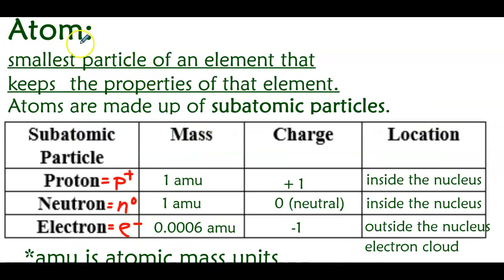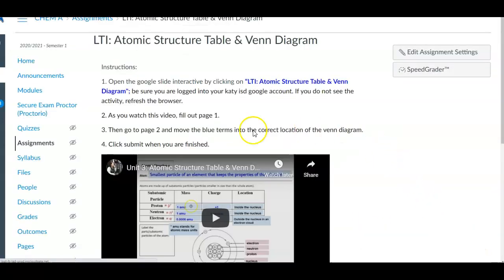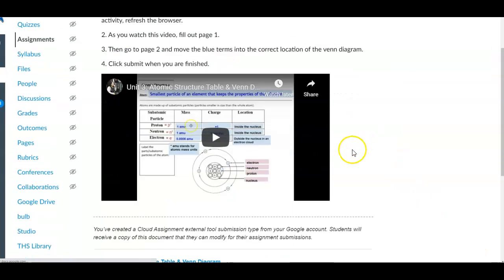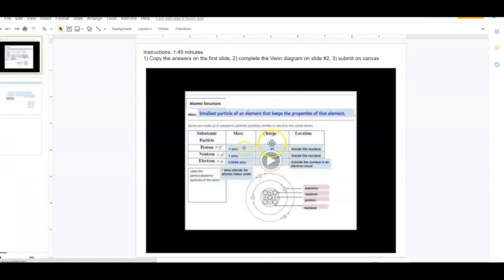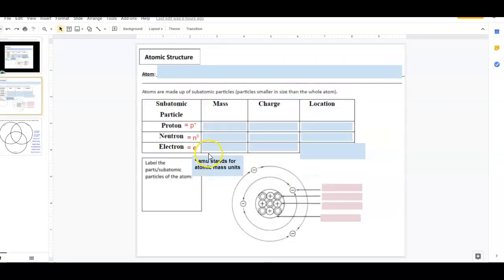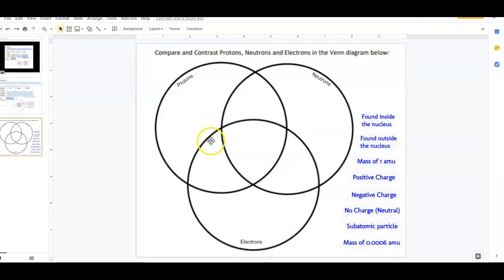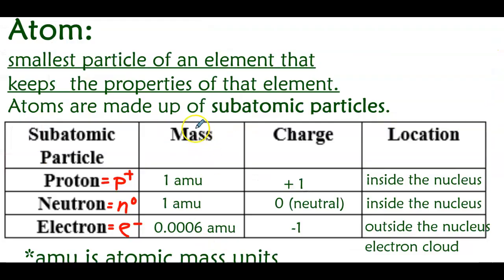Now you need to fill in this chart on Canvas. When you hit next, it brings you to the LTI atomic structure table and Venn diagram. When you open that into a new link, it brings you to this — you can watch the instructions if you want, and it's going to tell you to fill in the information on here and then complete the diagram by dragging these to where they belong. Here is the information in the table: the atom is the smallest particle of an element that keeps the properties of that element. Atoms are made up of subatomic particles — protons, neutrons, and electrons. You should know the mass, charge, and location of each.